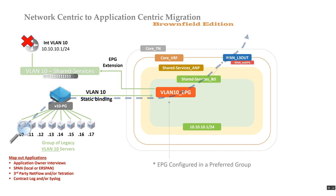With ERSPAN, you'd probably dedicate some service leaves and establish connectivity to a span collector. You're spanned through the ACI fabric spine backbone. There are design considerations there which I won't go too deep into, but it works well.